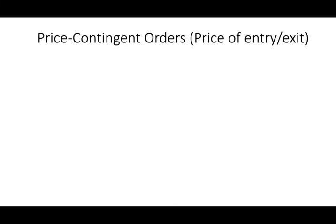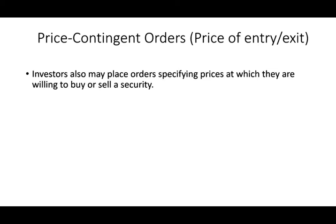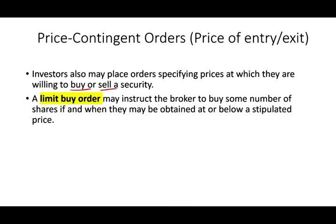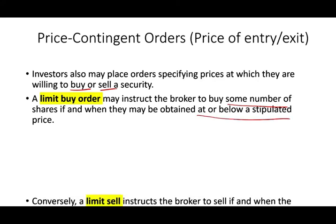Instead, you should place a price contingent order, where you specify what price you want to buy or sell at. Investors place orders specifying prices at which they're willing to buy or sell. You can place a limit buy order instructing the broker to buy shares at or below a stipulated price, or a sell limit order to sell when the price rises above a specified limit.